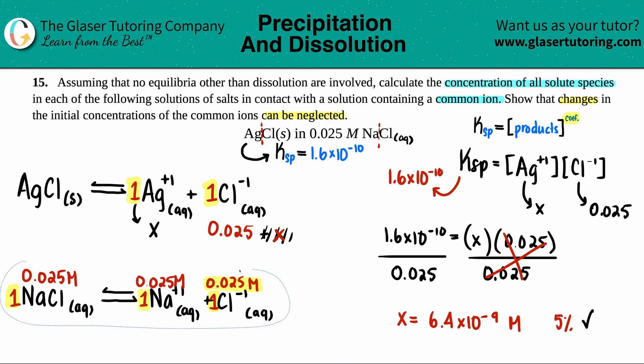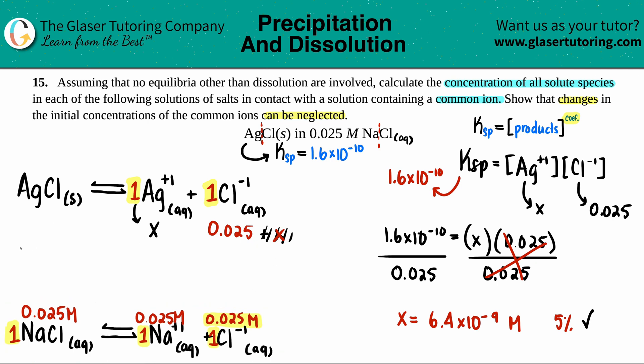So in terms of the answer, if I actually brought this down a little bit, basically we have Ag plus and Cl minus. Ag was just x, so that has to be the 6.4 times 10 to the negative 9th molarity. That's the concentration of the Ag plus. And then with the Cl minus, we do have to go back and say, 0.025 plus x. So let's just see if it's going to change the number. I mean, I would probably suggest no because it's such a small, small, small number. Let's just see. Yeah, no. So we would just say 0.025 molarity. And those are your two answers. That's it.